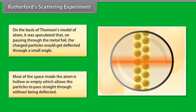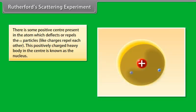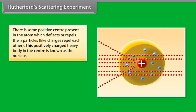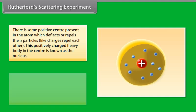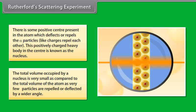Most of the space inside the atom is hollow or empty, which allows the particles to pass straight through without being deflected. There is some positive center present in the atom, which deflects or repels the particles, like charges repel each other. This positively charged heavy body in the center is known as the nucleus. The total volume occupied by a nucleus is very small as compared to the total volume of the atom, as very few particles are repelled or deflected by a wider angle.